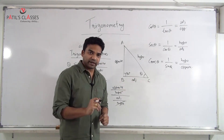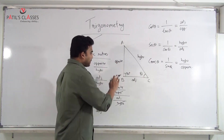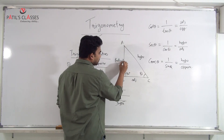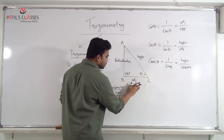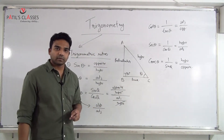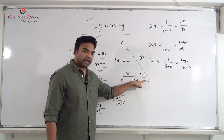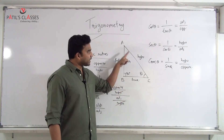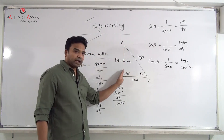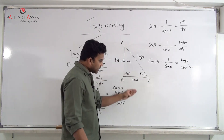Some schools teach using the names perpendicular and base instead of opposite and adjacent. The side opposite to theta is called perpendicular, and the side adjacent to theta is called base, because theta is attached to that side. Theta is not always at angle C — it can also be at angle A, in which case perpendicular and base interchange.